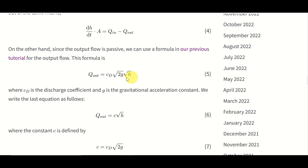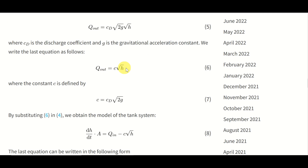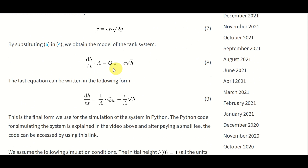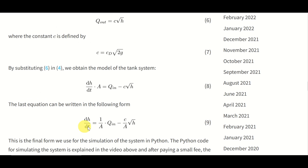Here is the formula. C_d is the discharge coefficient and g is the gravitational acceleration constant. We can write this equation as Q_OUT equals c multiplied by square root of H, where c equals C_d multiplied by square root of 2g. Next, we substitute this equation (equation 6) into equation 4 to obtain equation 8. Dividing equation 8 by A, we obtain equation 9, which is the final form we use for simulation of our system in MATLAB.